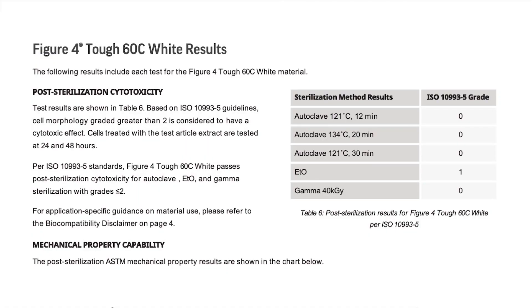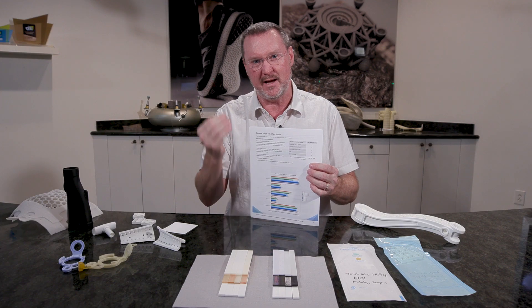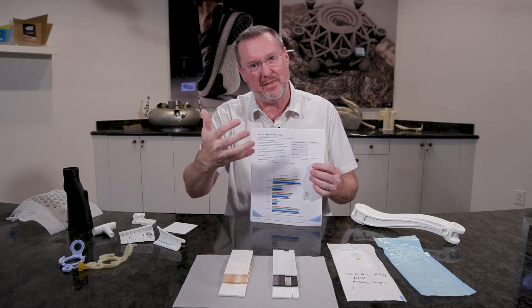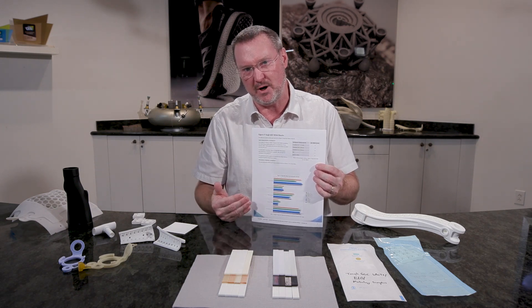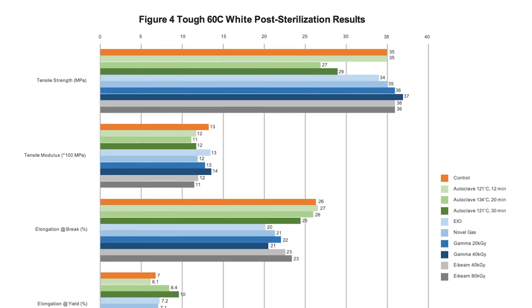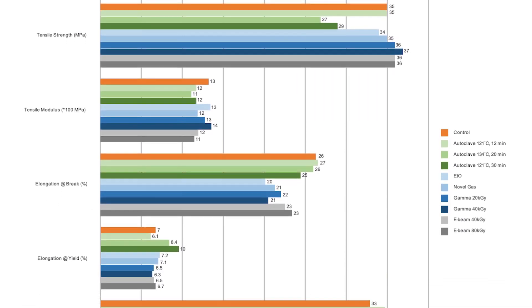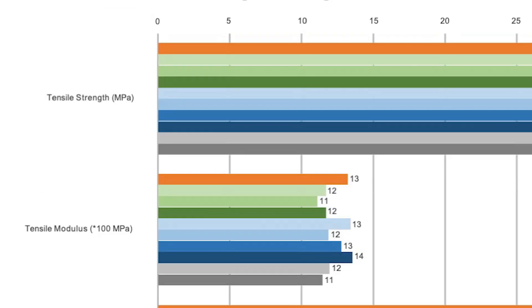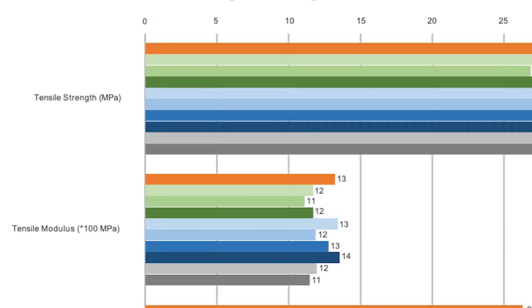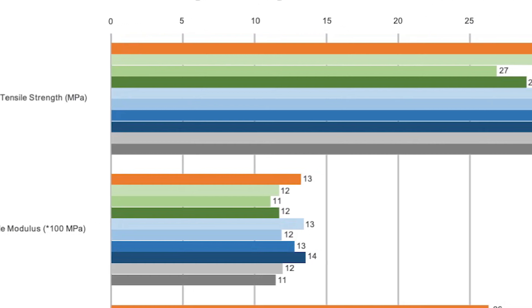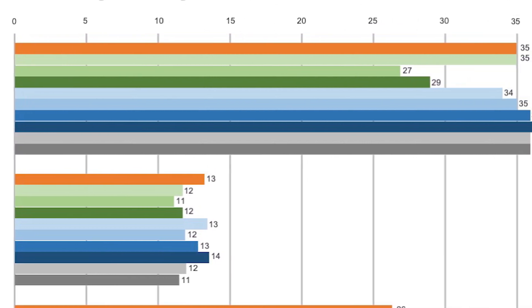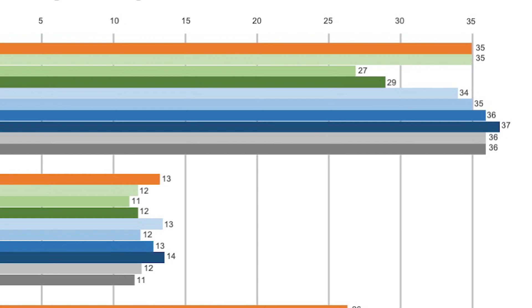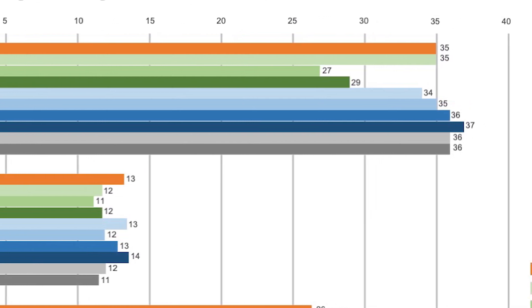When you go through the white paper, you'll see the different sterilization methods and these responses. We want to be data-driven — we want the data to drive the decision, not an opinion, so that you can make the right decision for your applications. We have a full sweep of mechanical properties: tensile, flex, elongation, HDT, and notch impact. We want to be sure we're holding the mechanical properties, or at least give you the ability to see where properties fell a bit or where they remained stable. You'll see the control and the different sterilization methods and their results.